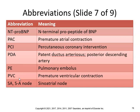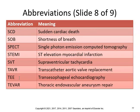PDA — patent ductus arteriosus. PE — pulmonary embolism (Serena Williams had a PE). PVC — premature ventricular contraction. SA node. SCD — sudden cardiac death. SOB — shortness of breath, not what it sounds like — if you see it in a chart, you'd say the patient is experiencing SOB. SPECT — single photon emission computed tomography. STEMI — ST elevation myocardial infarction. SVT — supraventricular tachycardia. TAVR — transcatheter aortic valve replacement.